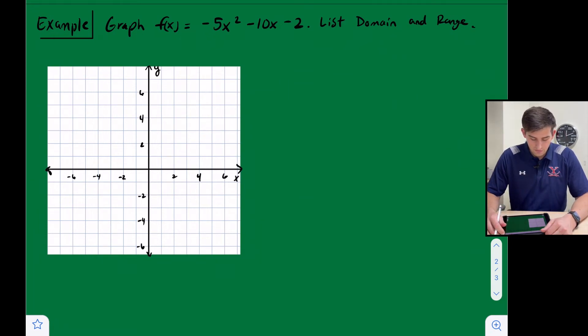Now, for example, number two, graph f(x) equals negative 5x squared minus 10x minus 2. So here we see this negative here, our parabola is going to be opening down. So something where we have a vertex at the top.